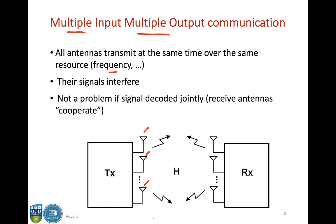In MIMO, interference is not a problem because if the antennas are spaced apart at a particular angle and spacing, the signals from the multiple antennas can interfere in a constructive fashion. If the signals are decoded jointly, this is not a problem — it is basically an advantage.